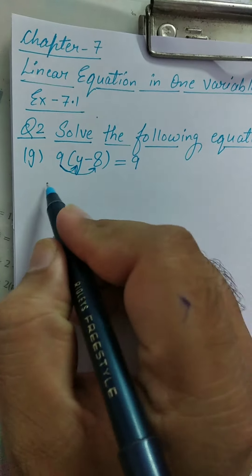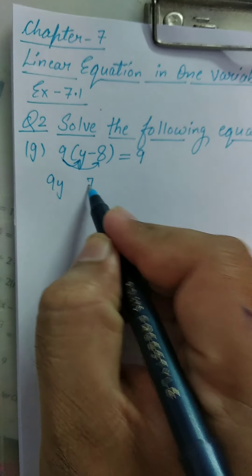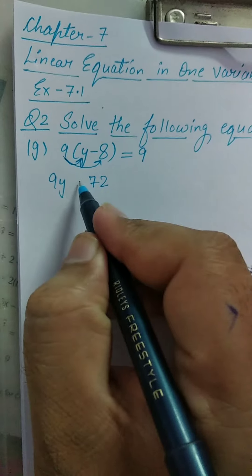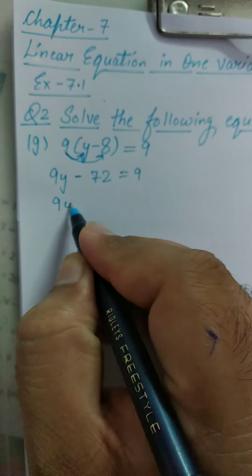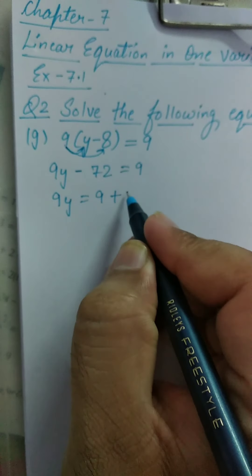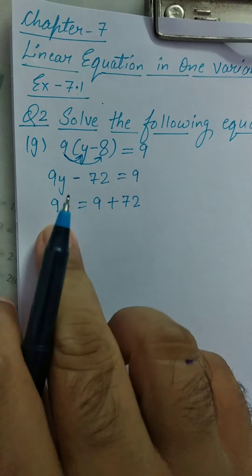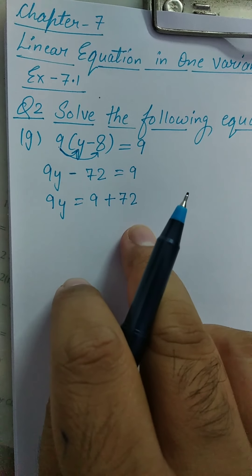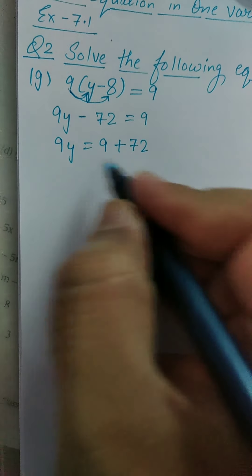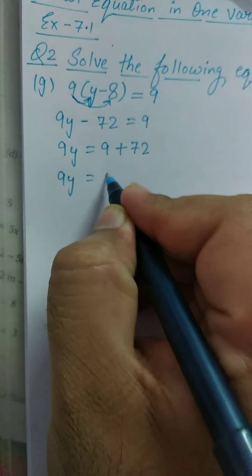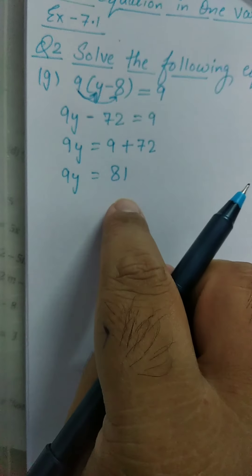9 multiplied by Y is 9Y. 9 multiplied by 8 is 72. In the middle you have a minus sign, so place minus sign — equal to 9. So, 9Y is equal to 9 plus 72. When I shift the minus 72 from the LHS to the RHS, it will become positive. So, 9Y is equal to 9 plus 72, which is 81.